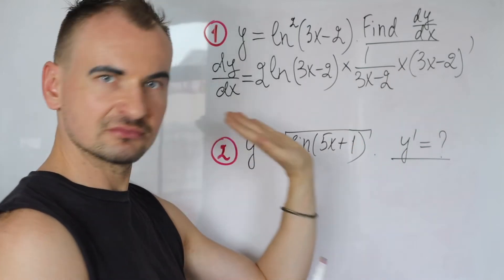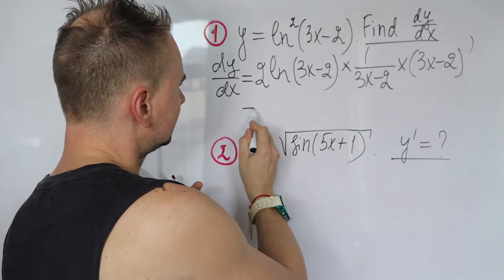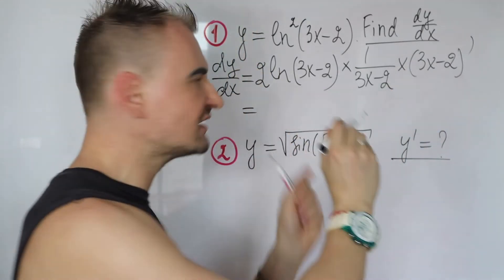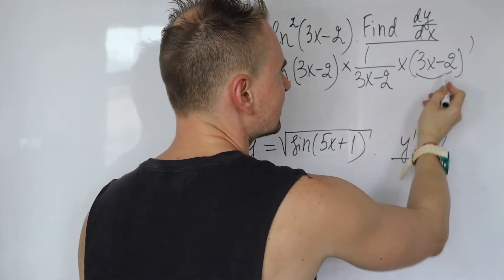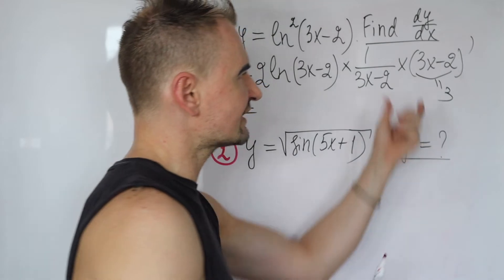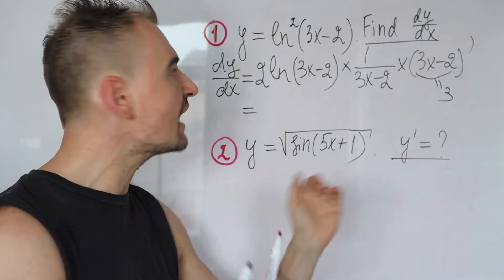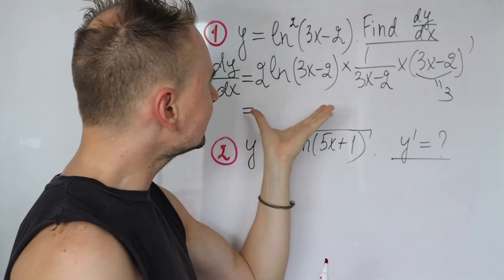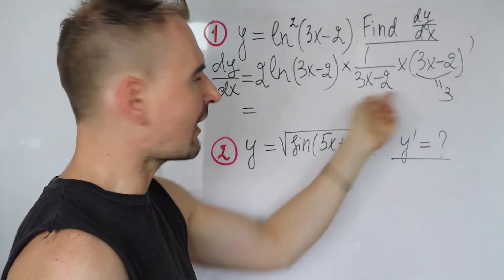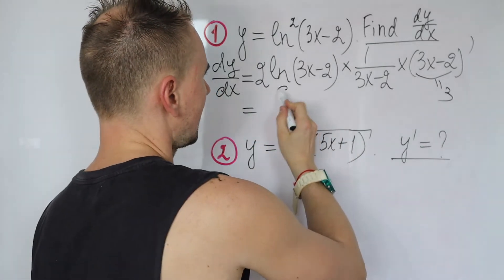Alright, now at this stage we are done. Now all you need to do is just simplify it down. So you have 3x minus 2, the derivative kind of elementary basic would leave you with 3 as the derivative. Negative 2 is just zero, derivative of x is one. Just rewrite it, this 2 and 3 get multiplied, become 6.